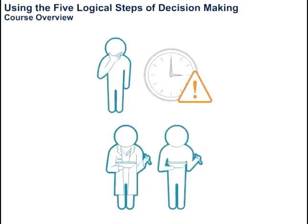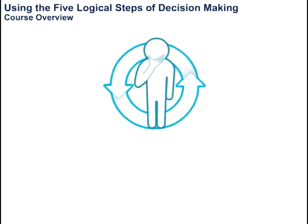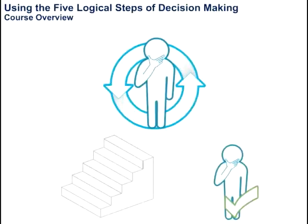This course focuses on the rational decision-making process and identifies the five steps you need to follow to make a good decision. It also explains that the actual result or outcome is independent of the quality of the decision itself.